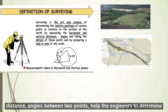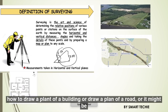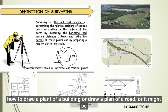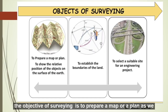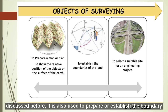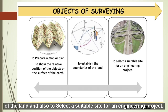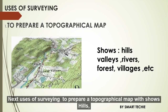After knowing information like distances and angles between two points, engineers can determine how to draw a plan of a building, a road, bridges, or a variety of other construction works. The main objective of surveying is to prepare a map or a plan. It is also used to prepare or establish the boundary of the land, or to select a suitable site for an engineering project.